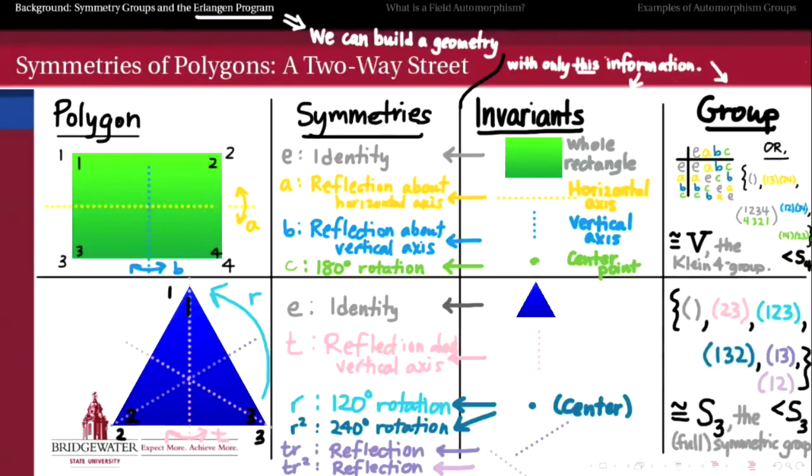So in the next video, we want to run with this analogy a little bit more and think about how an extension of fields might be similar to one of these polygons and how we can define a notion of symmetry for field extensions that will help us to understand what is the symmetry group of those field extensions and then hopefully thereby understand the structure of those extended fields.